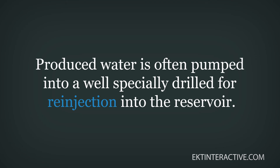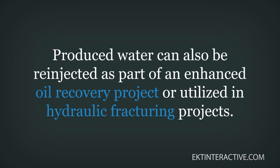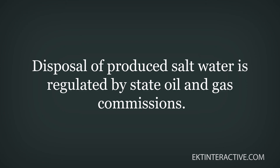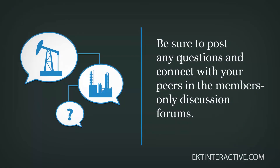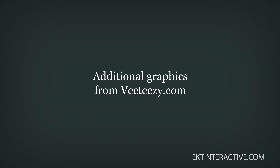One final important topic related to handling production at the surface is the disposal of produced water. The separation of salt water from other reservoir fluids is an integral part of oil and gas production operations, and the produced water must be treated and disposed of appropriately. Produced water is often pumped into a well specifically drilled for reinjection into the reservoir, which also helps maintain reservoir pressure. Produced water can also be re-injected as part of an enhanced oil recovery project, utilized in hydraulic fracturing projects, or trucked and pipelined to a certified water disposal facility.